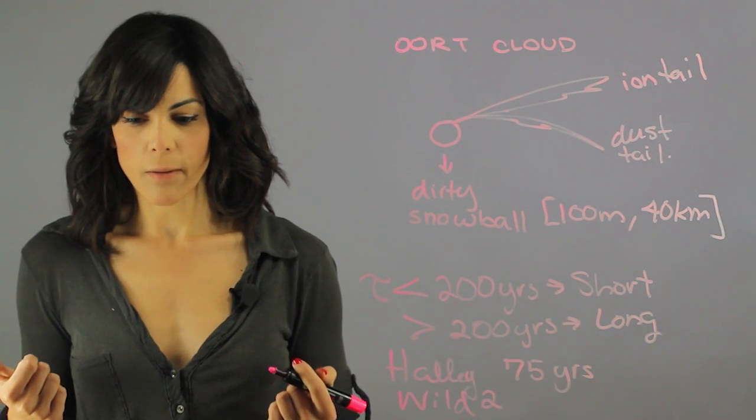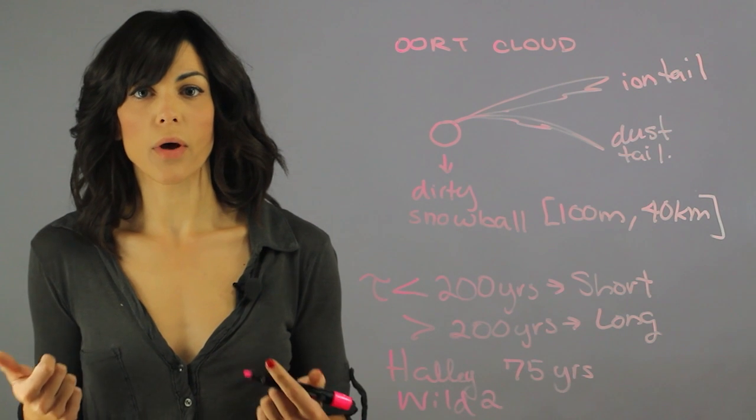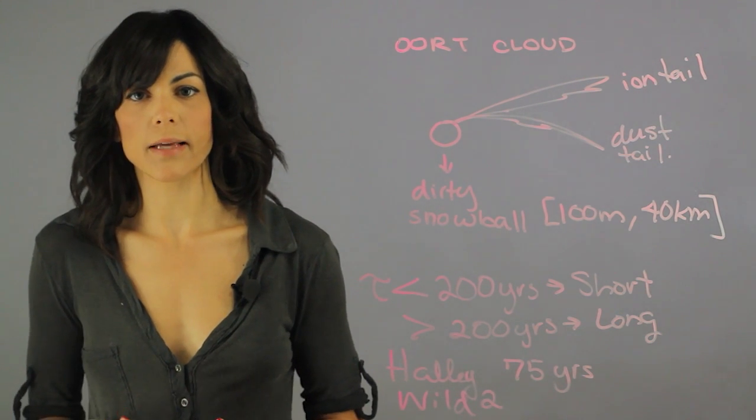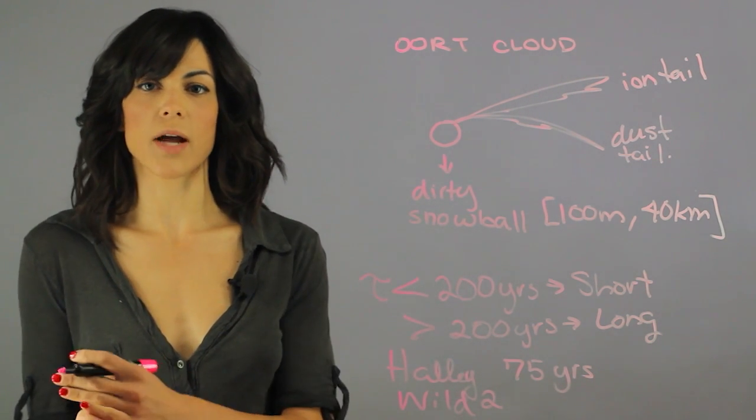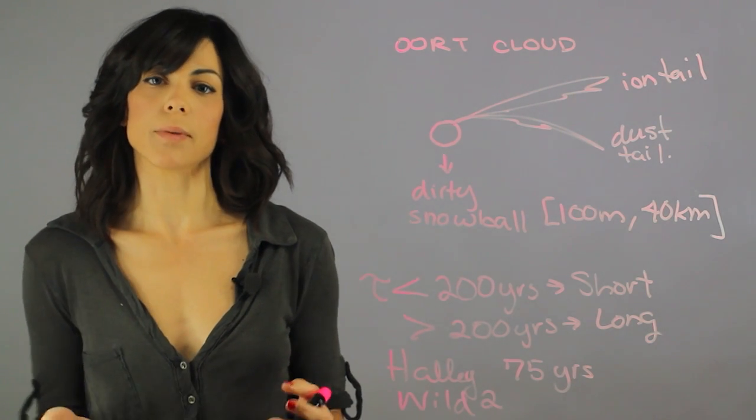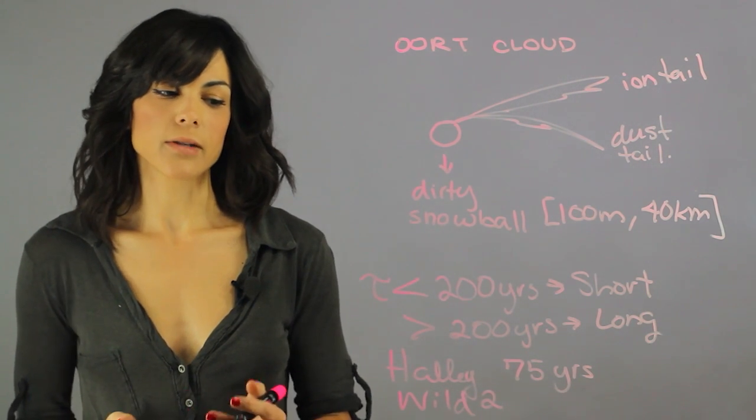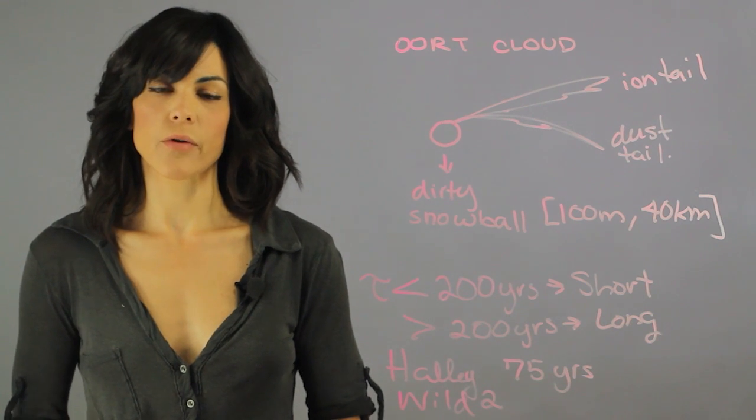There's a theory about what brought life onto planets, and it could have been comets that spread the building blocks of life. Wild 2 brought evidence of that.